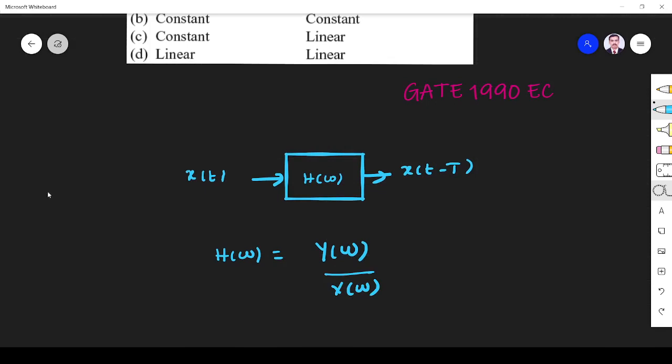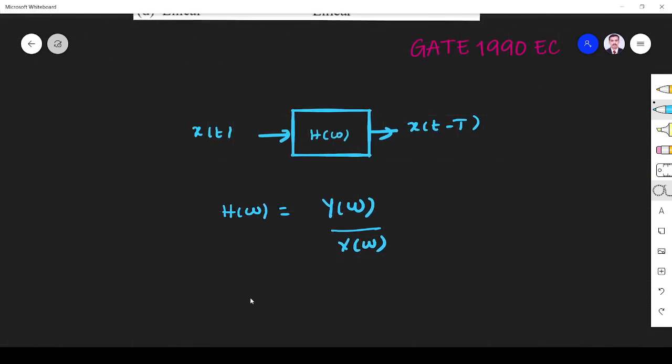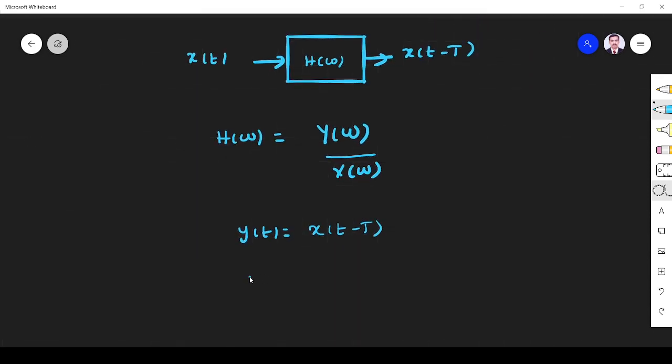What is my y(t)? As per the problem, we have y(t) is equal to X(t-T). Take the Fourier transform. What happens? Y(ω) is equal to X(ω) times e^(-jωT). I used the time shifting property of Fourier transform.